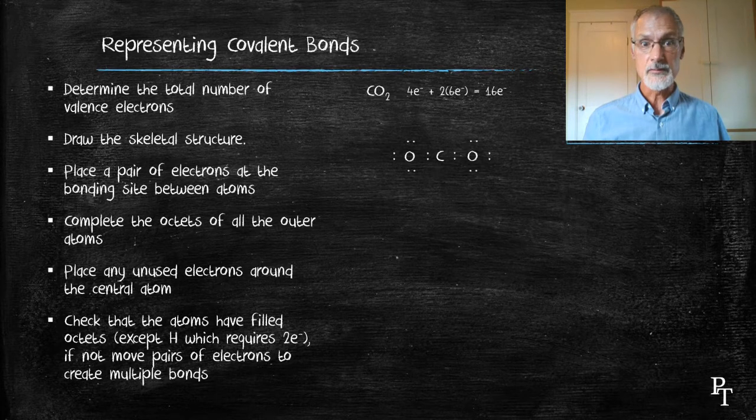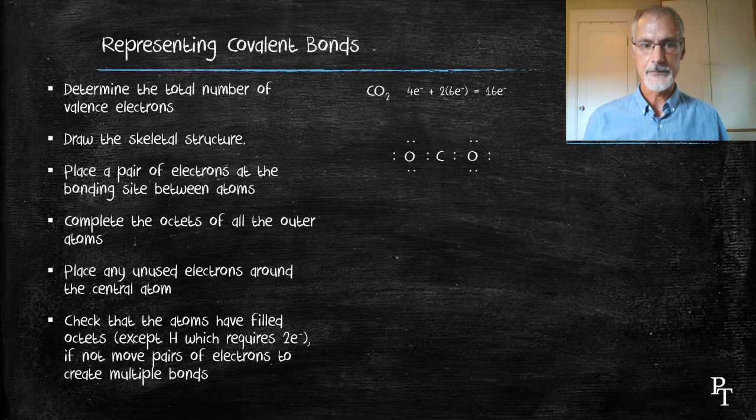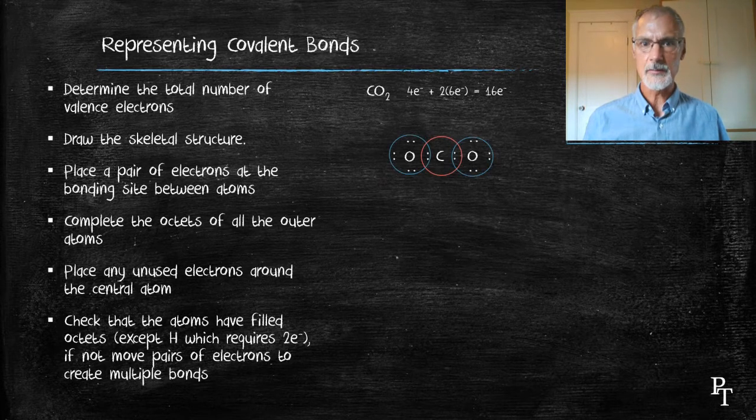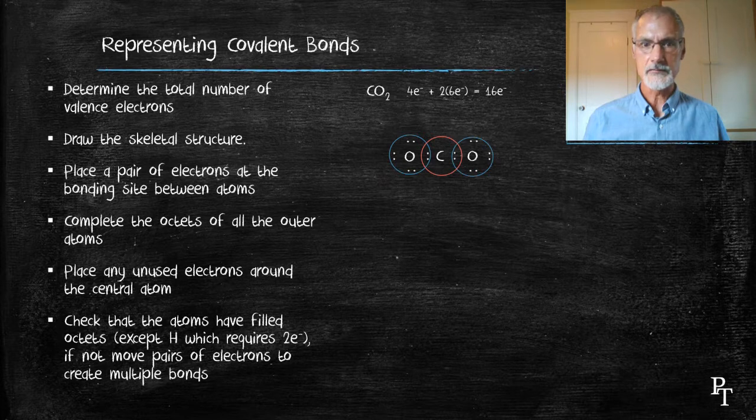There's no atoms remaining, so I can now move to the next step by checking their octets. Here I notice that the two oxygens are satisfied, but the carbon in the middle is not. It's short four electrons. To solve this, I'm going to move some of the electron pairs around.